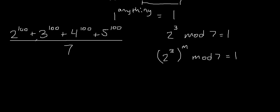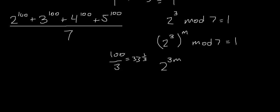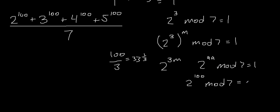Since we have 2 to the power of 100, let's divide 100 by 3 — because we want to write the exponent as 3m. That gives 33 and one third, so m will be 33. So 2 to the power of 3 times 33, which is 2 to the 99, mod 7 equals 1. We have 2 to the power of 100, so we need to multiply by 2 again, and multiplying by 2 multiplies the remainder by 2. So 2 to the power of 100 mod 7 equals 2.